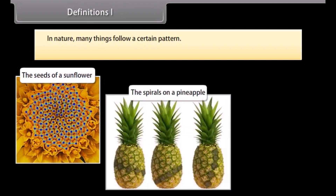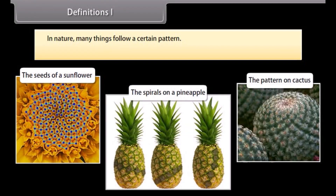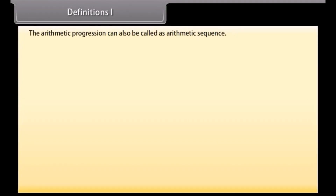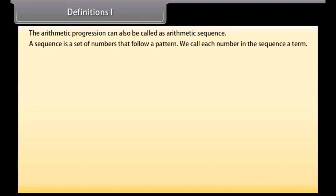In nature many things follow a certain pattern, such as the seeds of a sunflower, the spirals on a pineapple, the pattern on a cactus, and so on. Arithmetic progression is a study of one of such patterns. The arithmetic progression can also be called an arithmetic sequence. A sequence is a set of numbers that follow a pattern. Each number in the sequence is called a term.